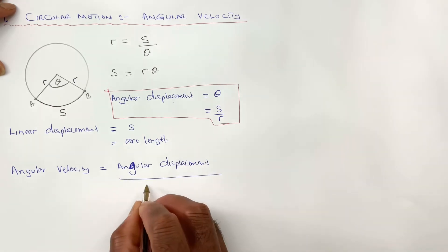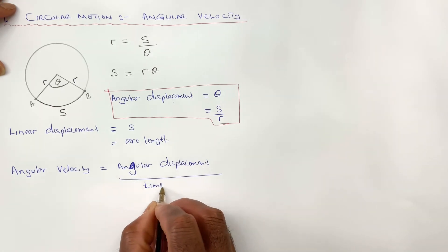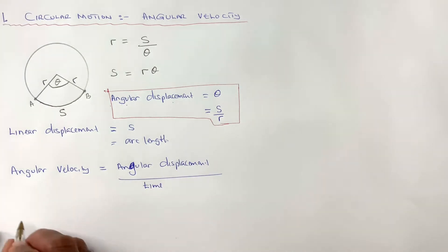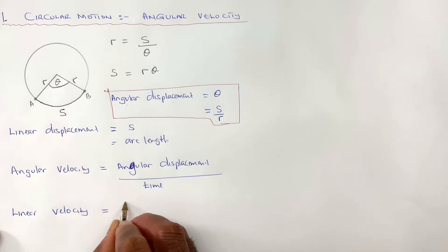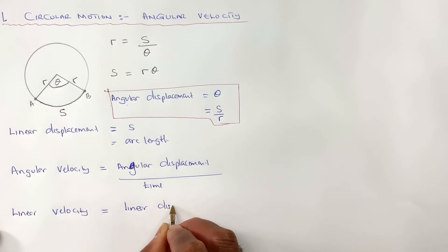So now, we have linear displacement over time. Likewise, linear velocity will be equal to linear displacement over time.